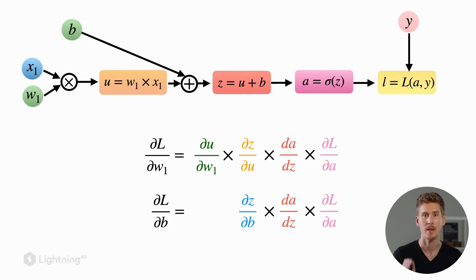Now that we define the forward pass of our graph, next we want to compute the gradient of the loss. That is computing the partial derivatives of the loss with respect to w1 and the partial derivative of the loss with respect to b.